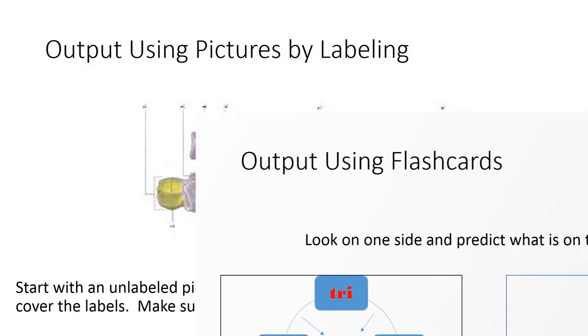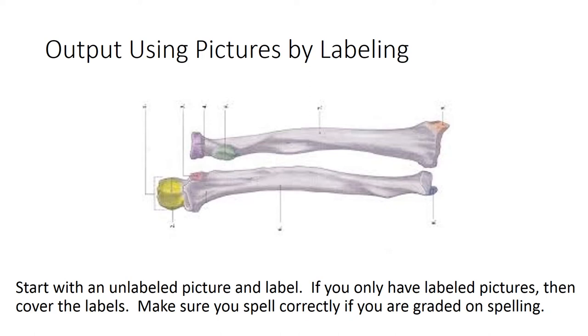Output using pictures by labeling. Start with an unlabeled picture and label. If you only have labeled pictures, then cover the labels. Make sure you spell correctly if you are graded on spelling.